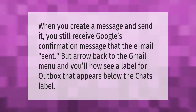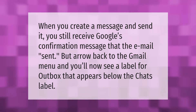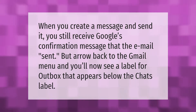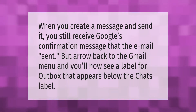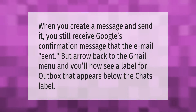When you create a message and send it, you still receive Google's confirmation message that the email was sent. But go back to the Gmail menu and you'll now see a label for Outbox that appears below the Chats label.